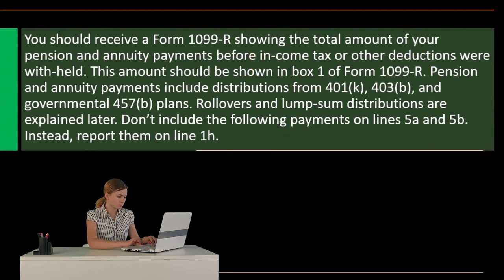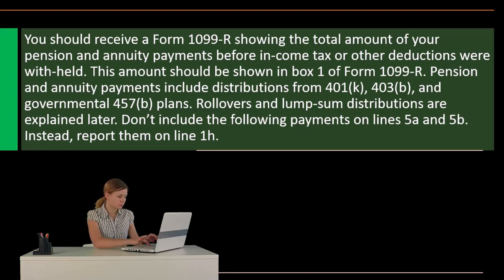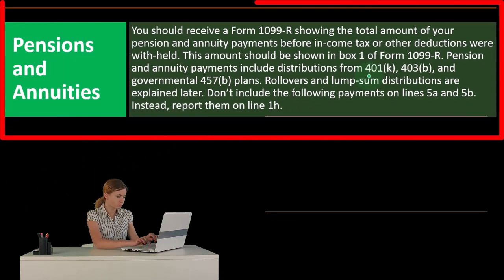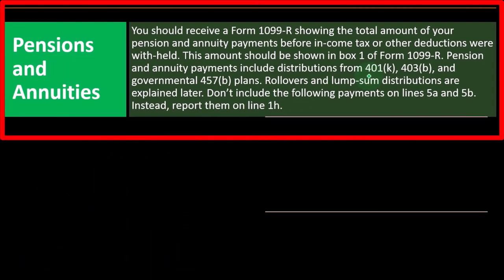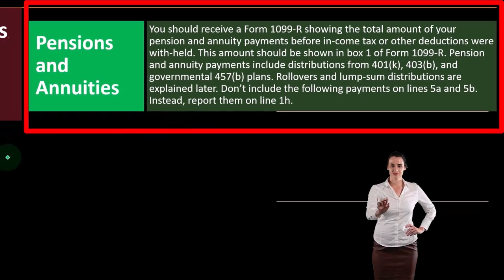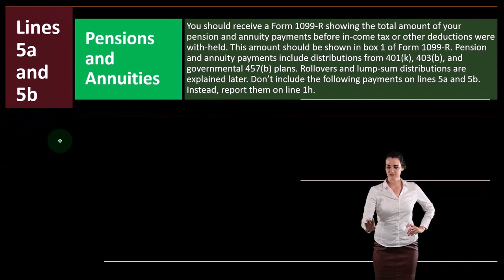Pension and annuity payments include distributions from a 401k plan and 403b plan. The 401k is a typical plan for a business, and the 403b is often for government-type entities and public sector areas, as well as government 457 plans.